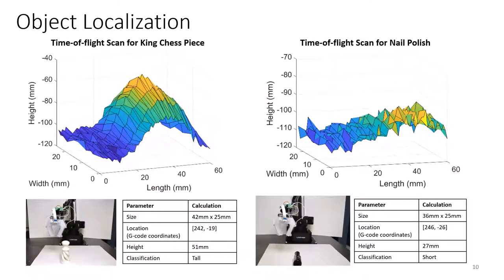In these two figures, data from time-of-flight scans are plotted. On the left, we have a scan of a king chess piece, and on the right, we have a scan of nail polish. The system output for each desired parameter is shown below the plot, which is size, location in xy-coordinates for the robot arm, height, and height classification. The height of the object is classified as either short or tall, which is just from using a threshold value.